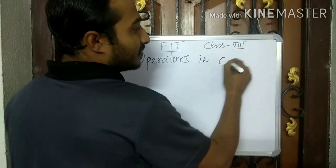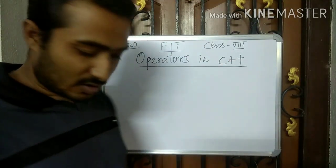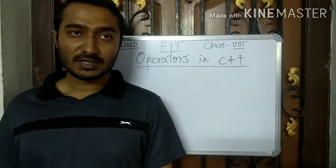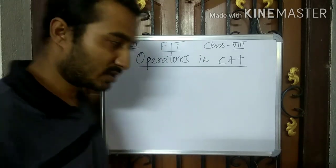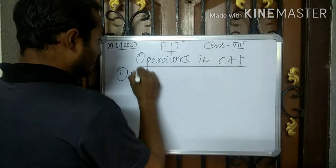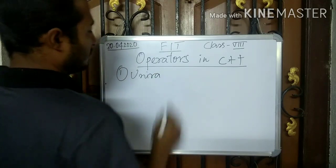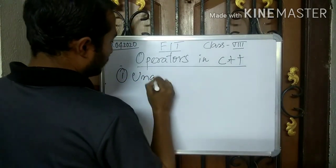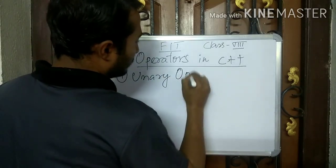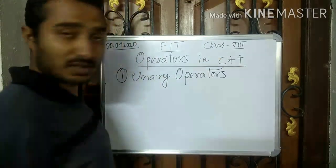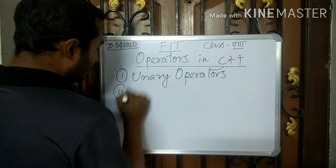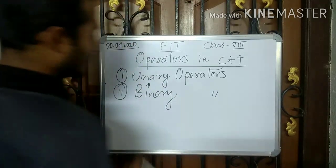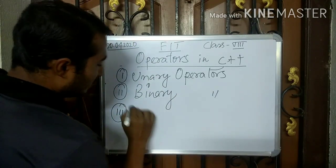Operators in C++. In C++ we basically use three kinds of operators. The first one is unary operators, the second one is binary operators, and the third one is ternary operators.